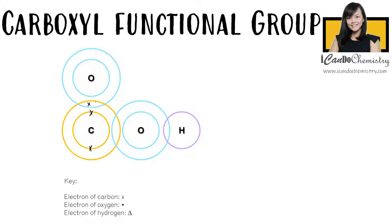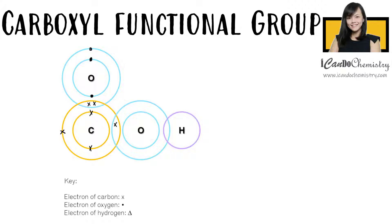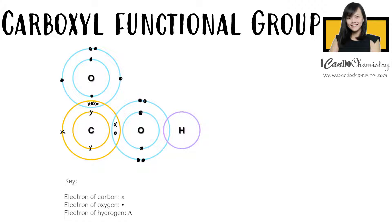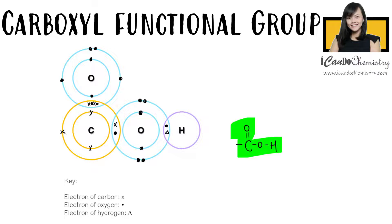Now all members in the carboxylic acid homologous series have a carboxyl group, and they will use this functional group for chemical reactions.